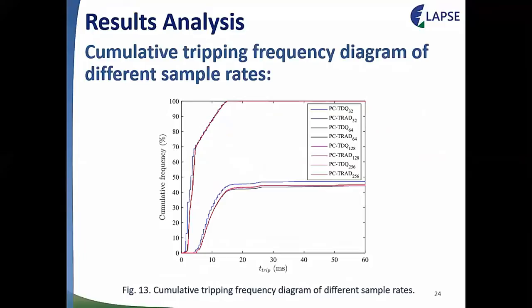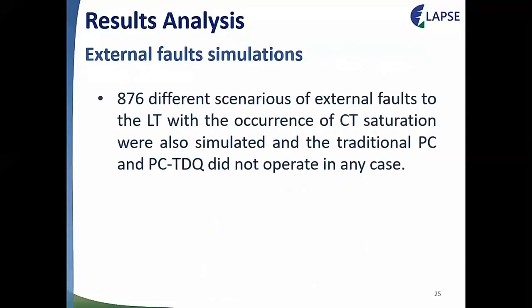The simulations were carried out with a sampling rate of 256 samples per cycle; however, other rates can be used. To demonstrate this, the same cases were simulated with emulation of different sampling rates: 32, 64, 128, and 256 samples per cycle. The results show that different sampling rates can indeed be applied. Finally, several external fault cases to the transmission line with CT saturation were also simulated, and both the traditional PC and PC-TDQ did not operate in any case, proving their safety.